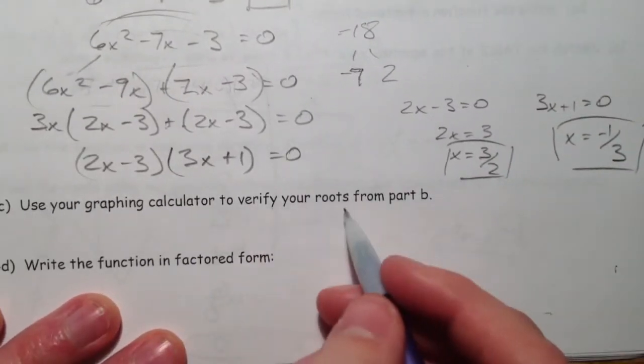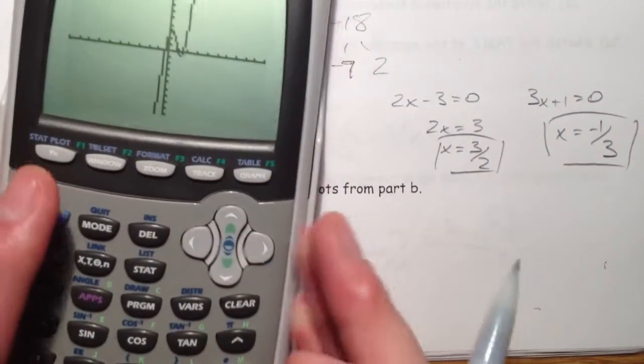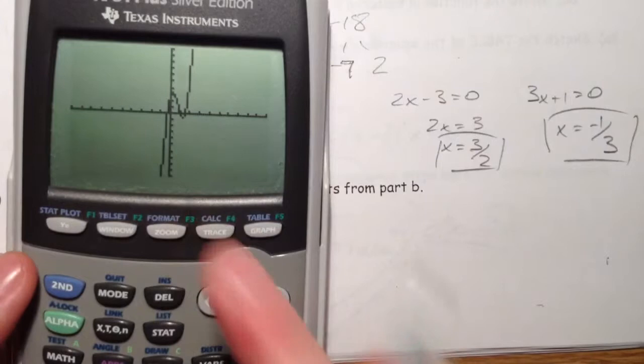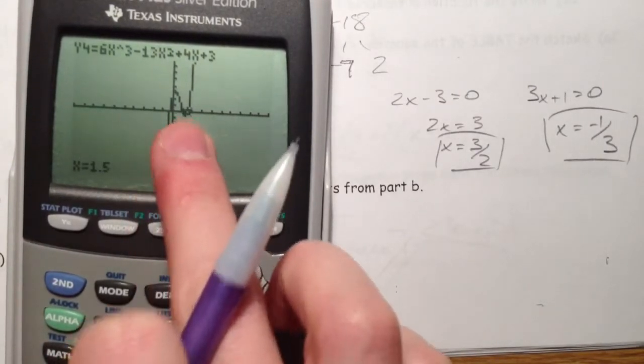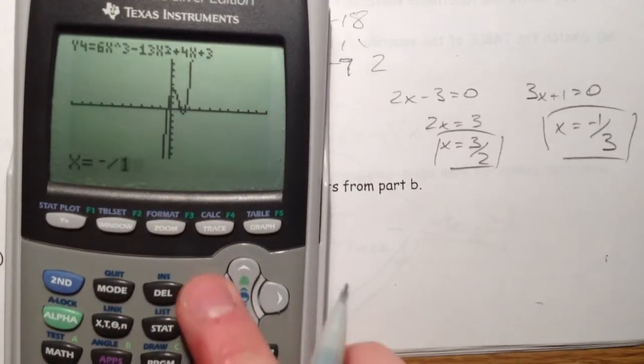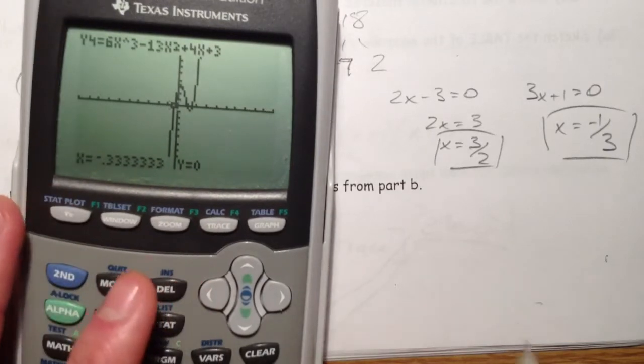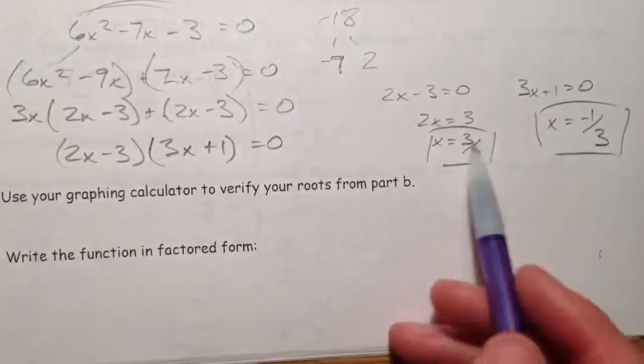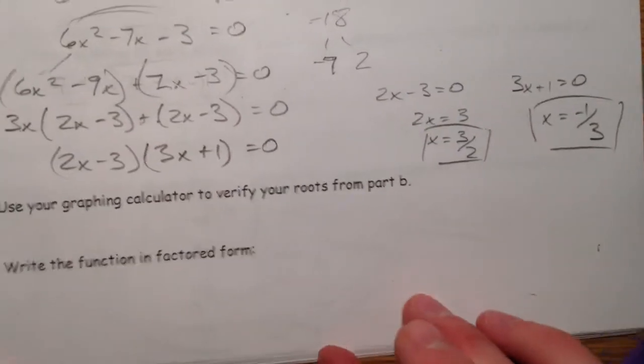So it says use your graphing calculator to verify. One way I like to do this is go back to the graph and just hit the trace button. Type in 3 halves, so it changes it to 1.5, and you get 0. And you can type in negative 1 third and you get 0. This is just the same thing as if you didn't have a calculator and you took these values and you plugged them back into your original, but the calculator just makes the plug and chug a lot faster.